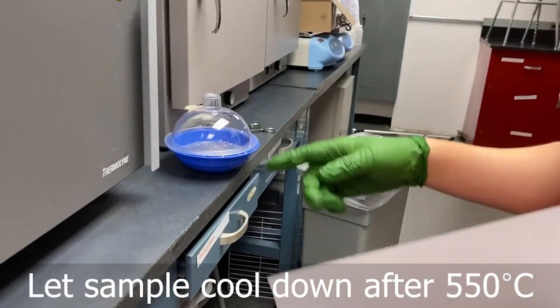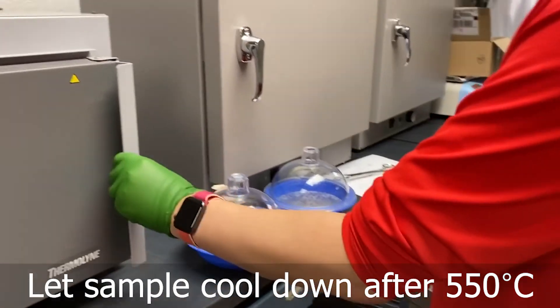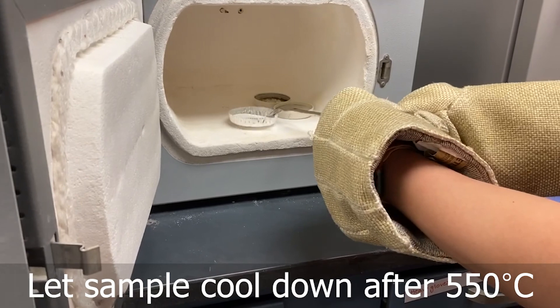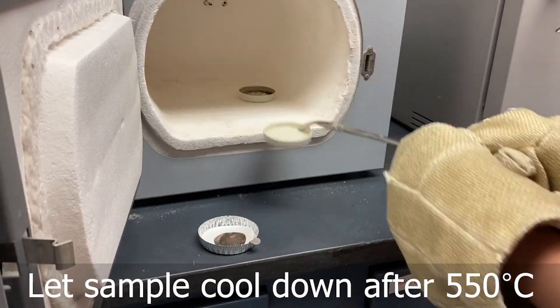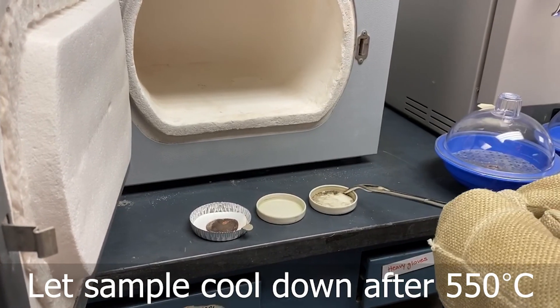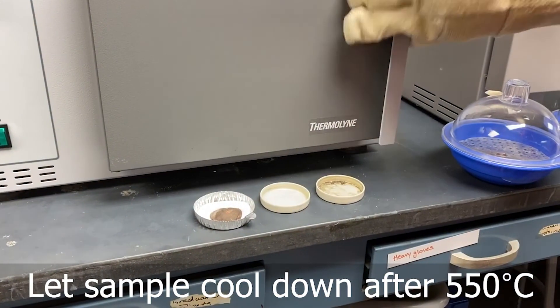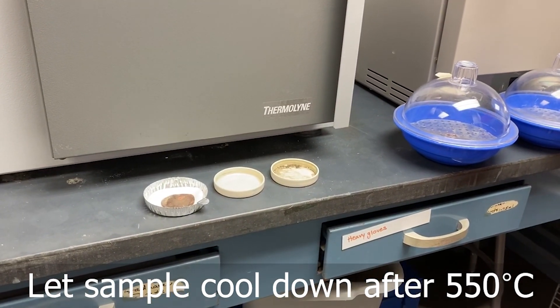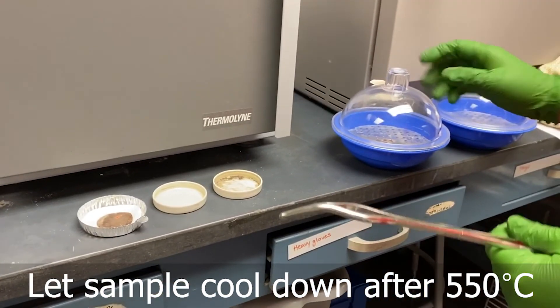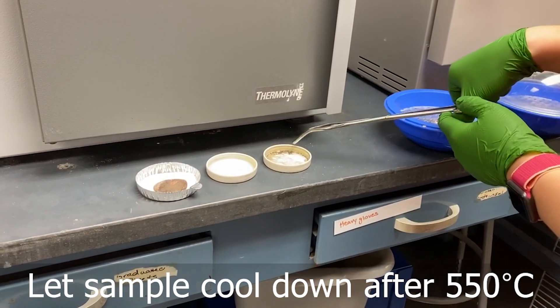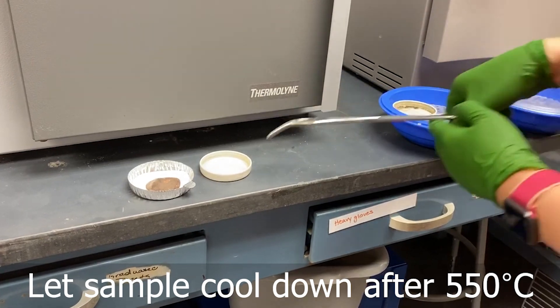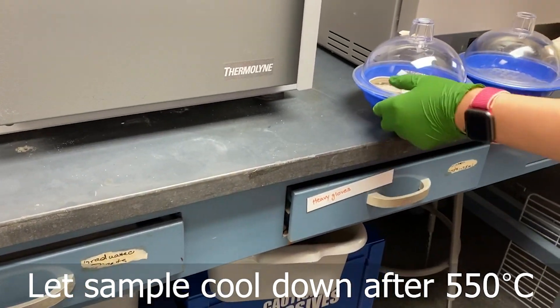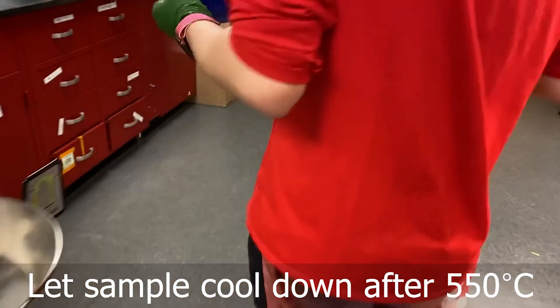And then we should wait this for about 15 minutes. So now it is after 15 minutes, we are going to take them out. And then make this air dry for several minutes. After that, we can transfer them into the desiccator to make them cool down to room temperature.